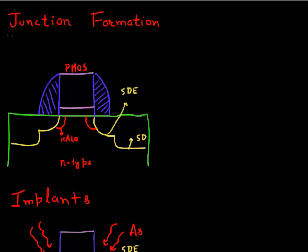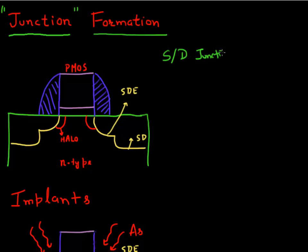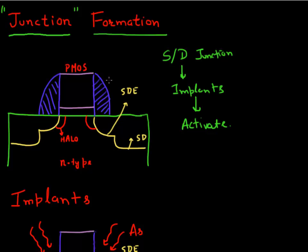The next module in this front end of the line process flow is the formation of junctions. We need to form source and drain junctions, which typically involves implanting the species. We want to implant dopants and then activate those dopants to form the source and drain junctions. These implants consist of multiple species, each with a different purpose.